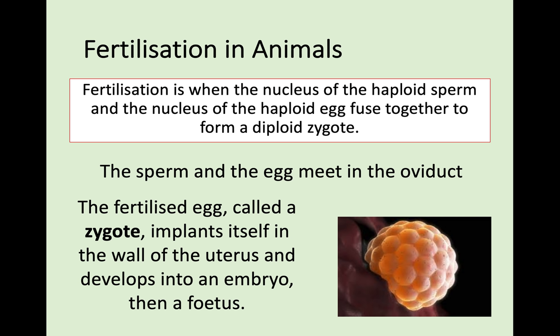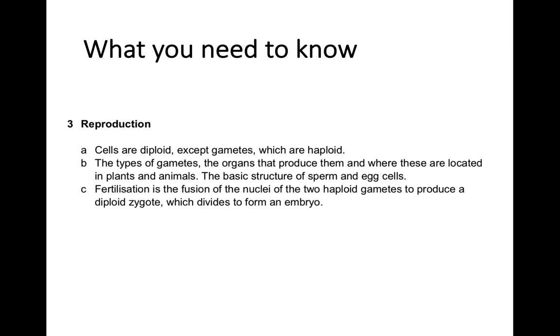Once the fertilized egg — the diploid zygote — is formed, it implants itself in the wall of the uterus. That's where it begins to grow and develop into an embryo, then a fetus, and once born, a baby. So that's all you need to know for this key area. It is quite short, but there are a few new terms and phrases to know.